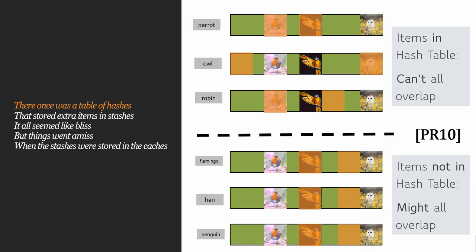For instance, imagine that the table contains the parrot, the owl, and the robin. We know from this that the parrot's two query locations cannot be identical. However, if instead we query the flamingo, the hen, and the penguin, it is possible — though unlikely — that all three queries result in the same two locations being queried. If this event were to occur, we would know it is impossible that all three of those items existed in the table. This therefore presents a subtle security leakage, meaning the oblivious RAM in general is not secure.